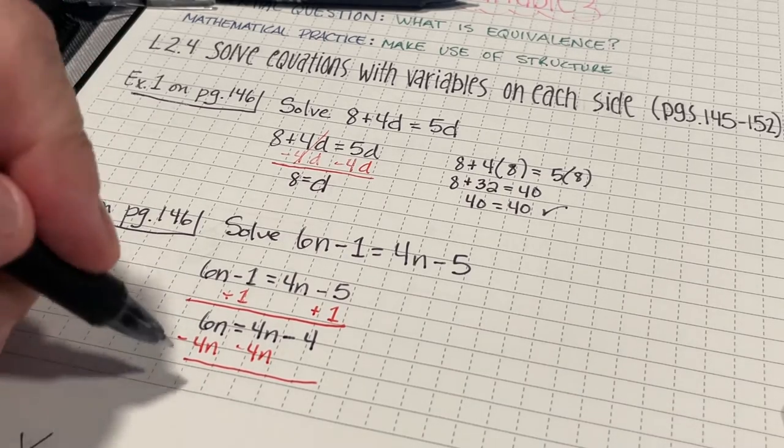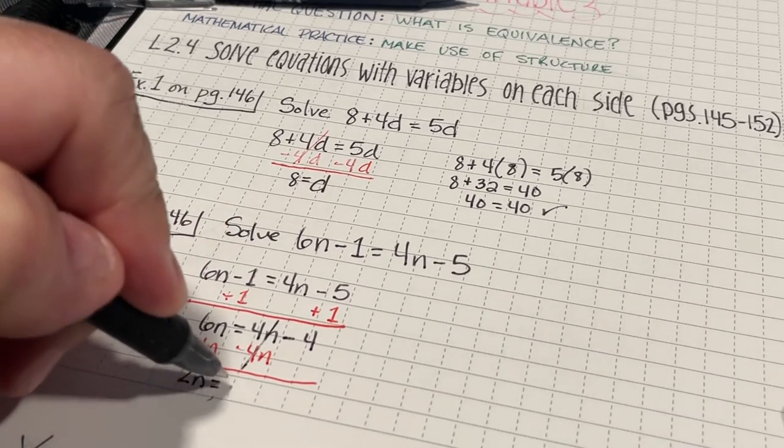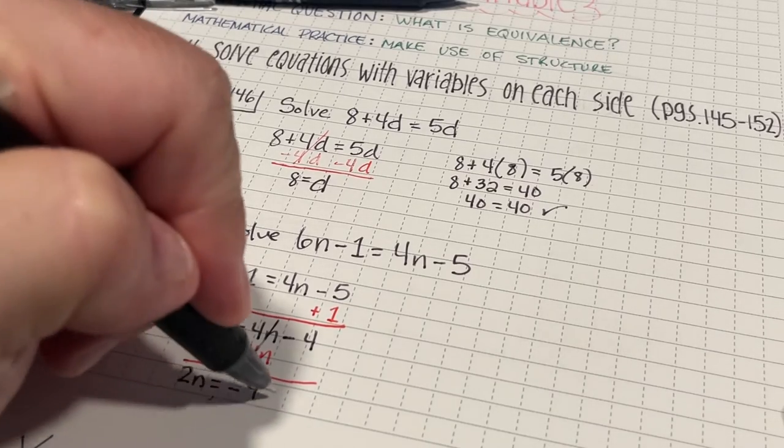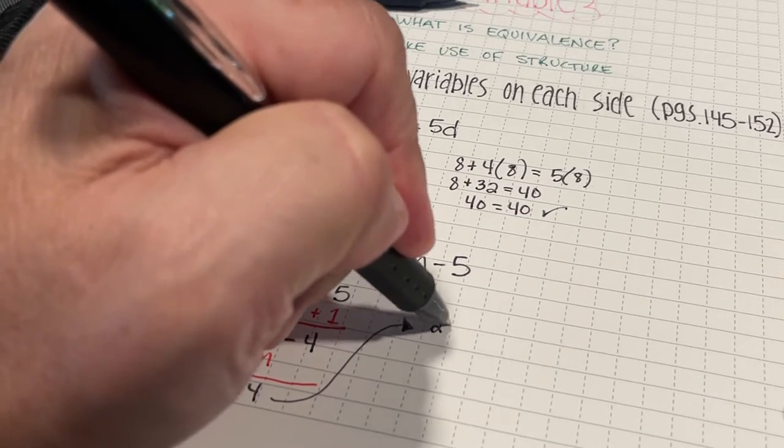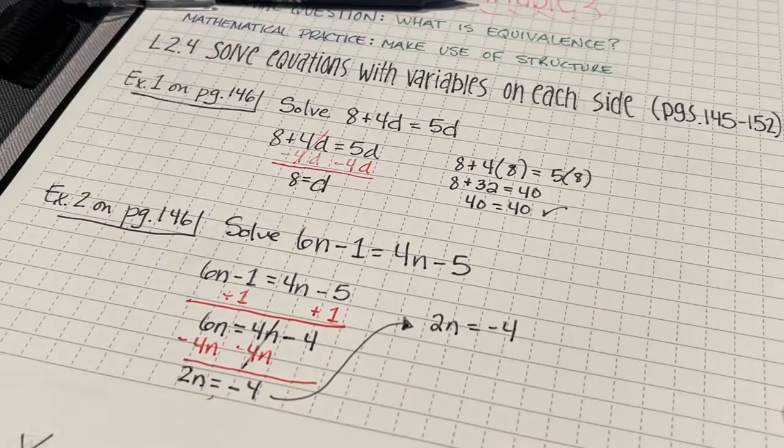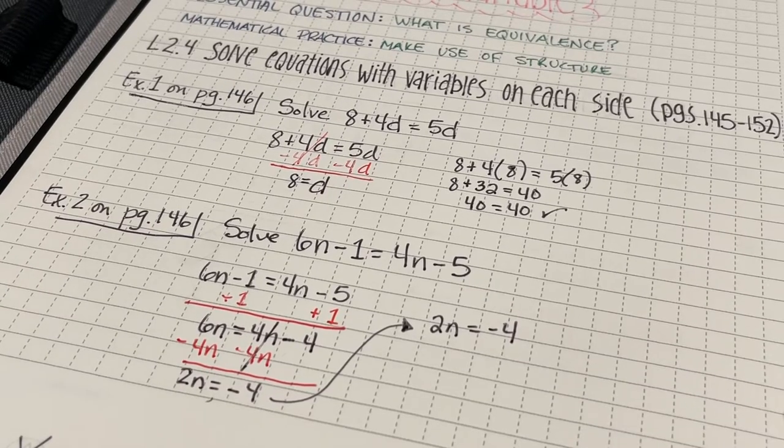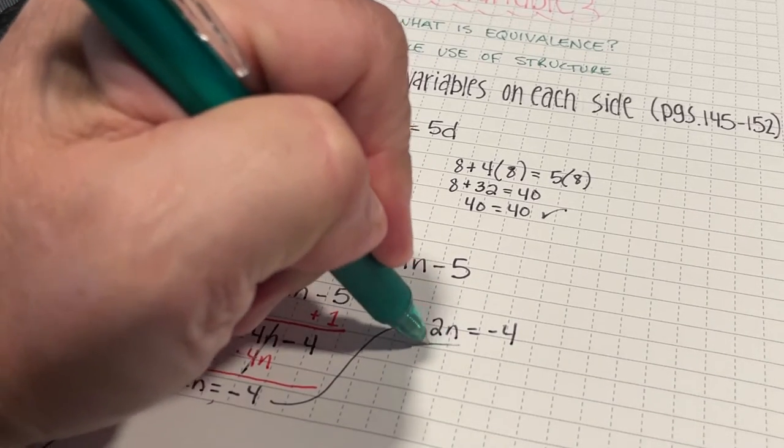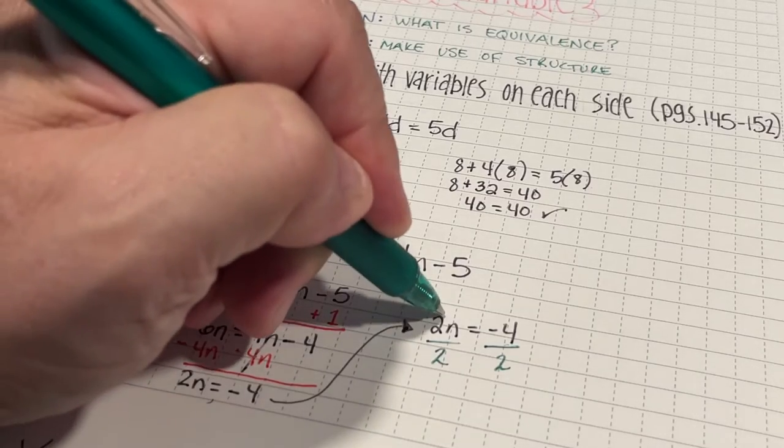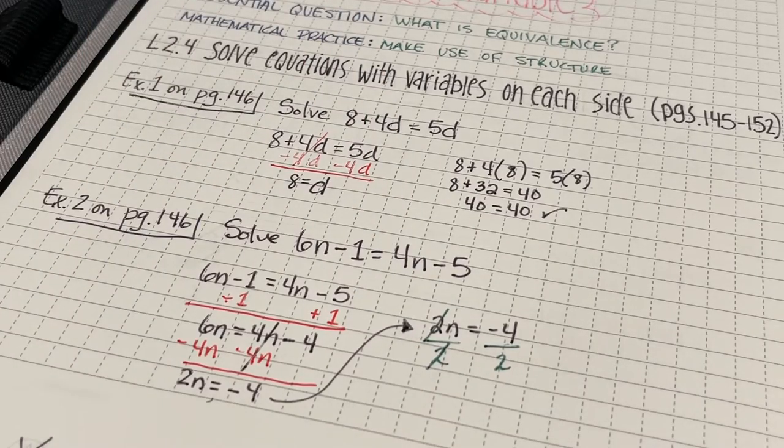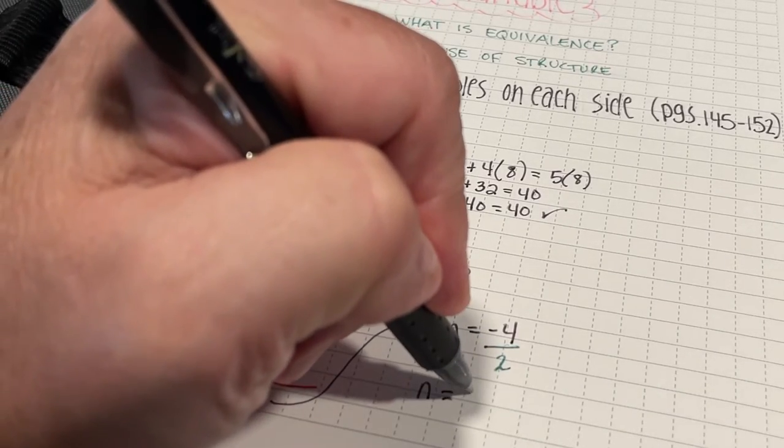So, 6n minus 4n, that's 2n. That's going to equal, well, that's going to be a 0. It's going to equal negative 4. I'm just going to come back up here since I'm running out of room there. So, I have 2n equals negative 4. My next step in solving this equation is for me to divide 2n by the coefficient 2 and 2n divided by 2 is going to be n negative 4 divided by 2 is negative 2.